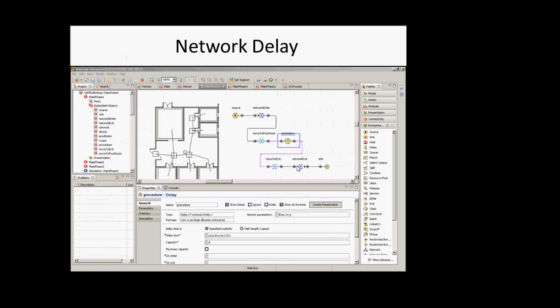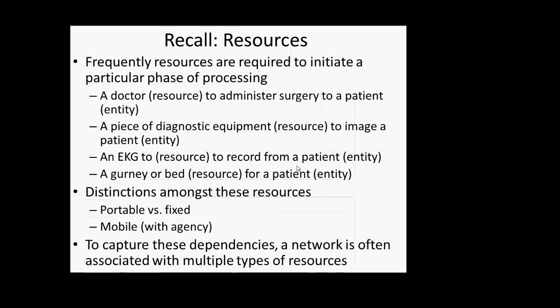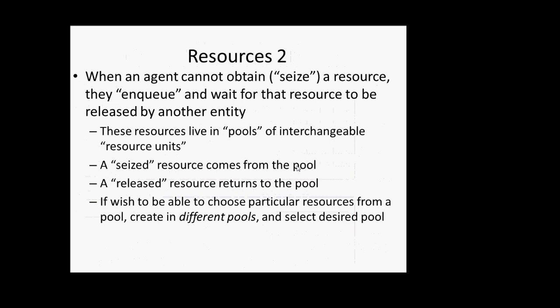I'd like you to go to main phase two. You'll notice that in addition to the network being associated with resource pools, there's a further concept of 'network seize' and 'release.' Seize is going to seek exclusive association of an entity with a resource — the entity will try to reserve a resource. This entity coming in wants to go to a procedure room to be examined. In order to do so, that entity needs to reserve one of those rooms so you don't have multiple entities in the same procedure room. Before the person moves to the procedure room, they're going to try to reserve that resource.